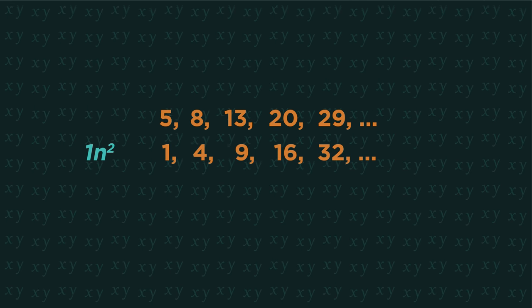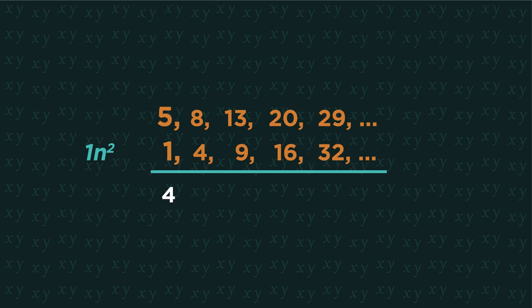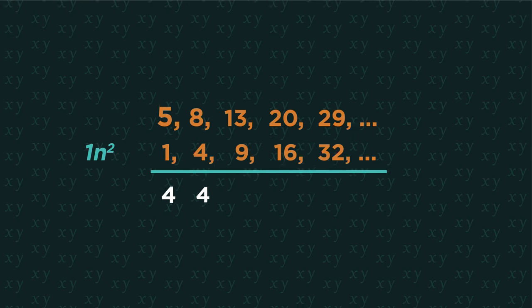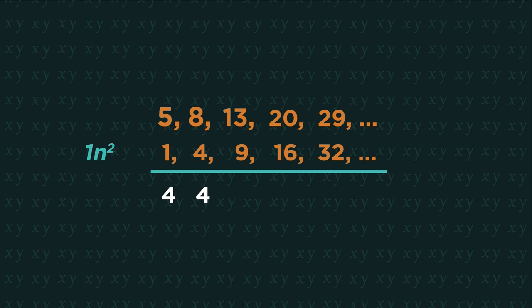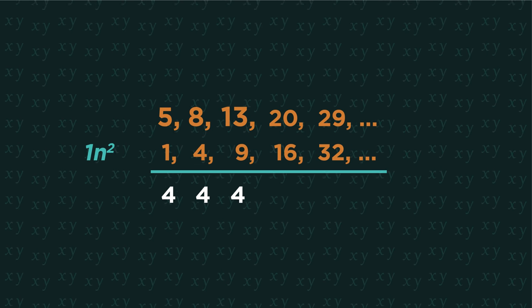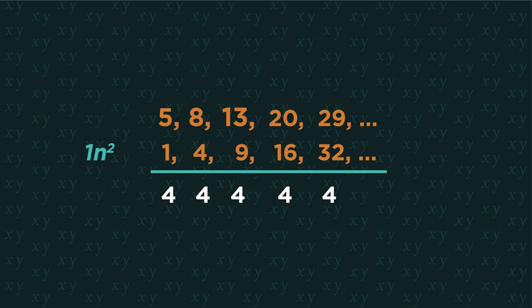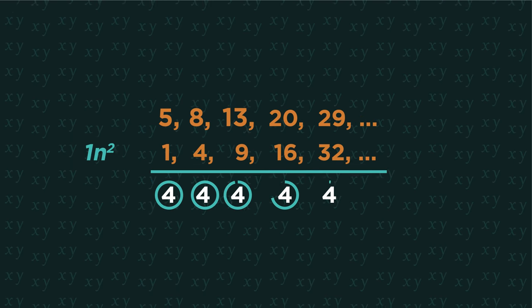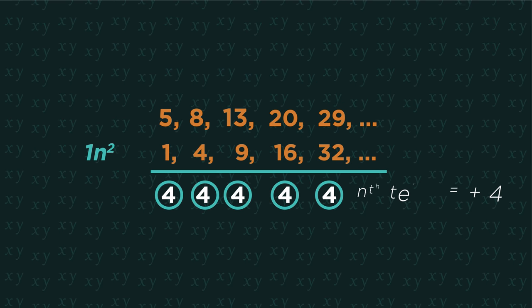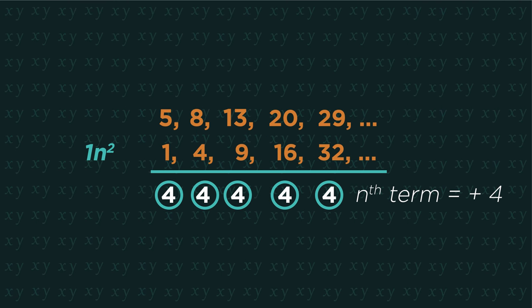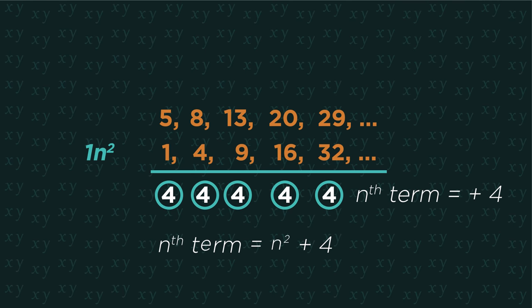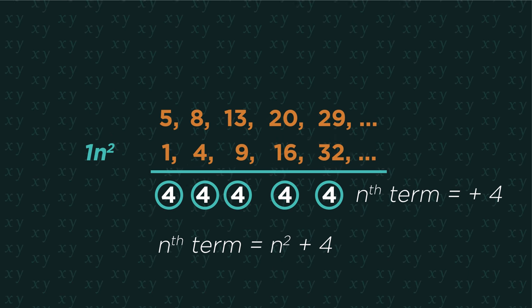Compare the difference. So 5 to 1 is 4, 8 to 4 is 4, 13 to 9 is 4 and so on. All you need to do is find the nth term of this sequence. And you have your quadratic nth term formula. So it's n squared plus 4 for this sequence.